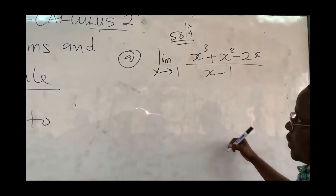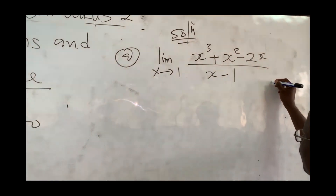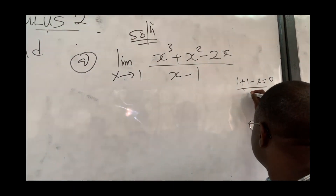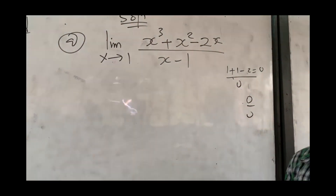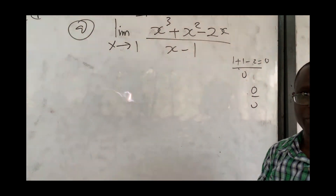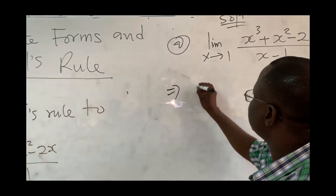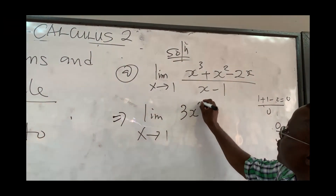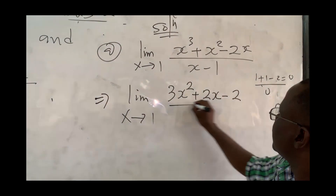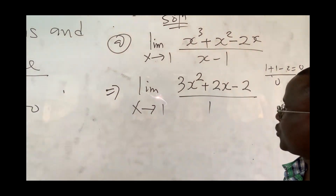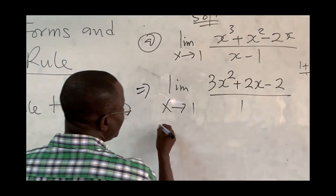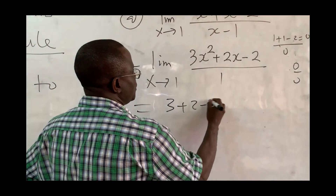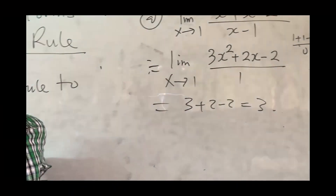For the first example, plug in x = 1: the numerator gives 1 + 1 − 2 = 0, and the denominator gives 1 − 1 = 0. So we have 0/0, an indeterminate form — apply L'Hôpital's rule. Differentiating: the numerator becomes 3x² + 2x − 2, and the denominator becomes 1. Now substitute x = 1: 3(1) + 2(1) − 2 = 3. So the limit equals 3.